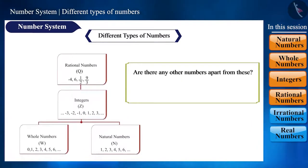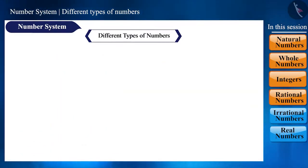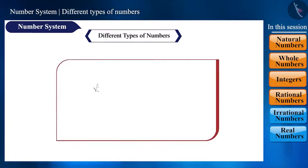Are there any other numbers left? Are there any numbers that we cannot represent as rational numbers? Yes, there are countless numbers which we cannot write as rational numbers. Such as, root 2, cube root of 3, cube root of 5, root 3, pi, root 15, etc. And we call such numbers as irrational numbers. We represent them with the symbol q dash.